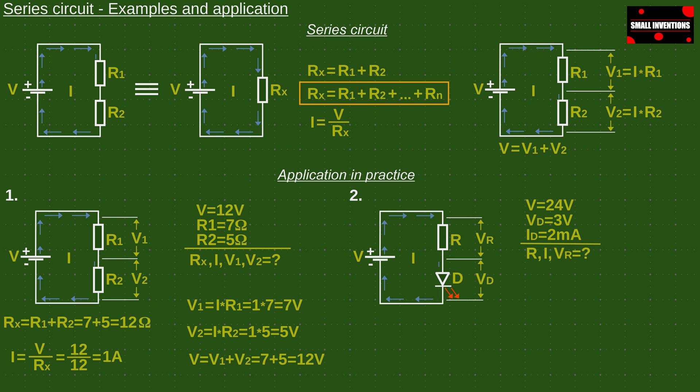Suppose our device uses a voltage of 24 volts. Then we have to calculate the resistor to limit the current through the series circuit to 2 milliampers. Also, we need to provide 3 volts for the diode to work properly.